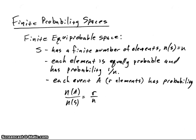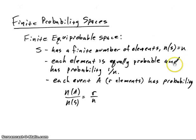For equi-probable spaces, we start with our sample space S, and that sample space will have a finite number of elements — we'll say that number of elements is equal to lowercase n. Now each element is equally probable, and if you have n elements all with the same probability, then the probability of each element is going to be 1 over n.